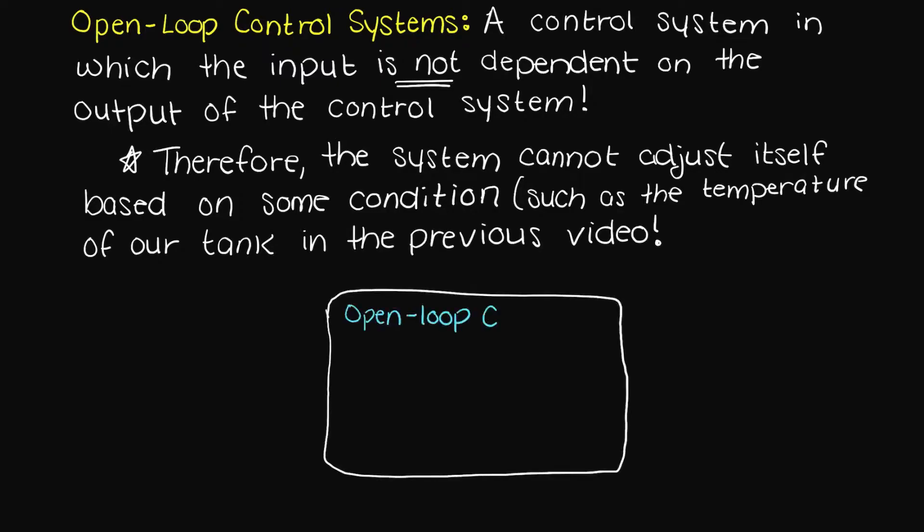Let's draw a block diagram of an open loop control system so we know what we're working with. So, what does this block diagram mean? Well, with an open loop control system we cannot adjust the input based on the output like we could with a closed loop control system, which we will talk about in the next video.